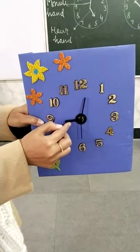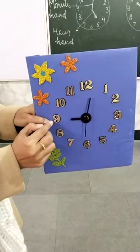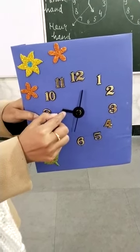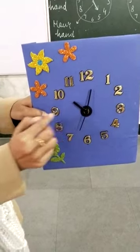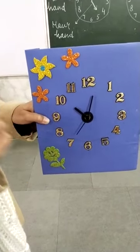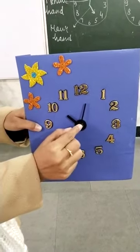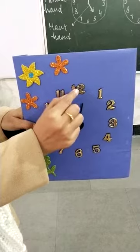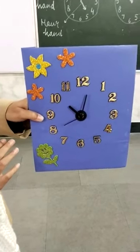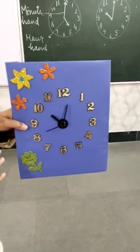If the hour hand points towards nine, that means it is nine o'clock. If it points towards ten, it is ten o'clock. But you have to keep in mind that the minute hand should be on twelve. This is how you see the time.